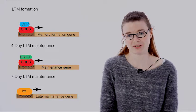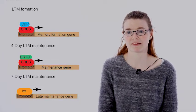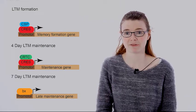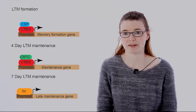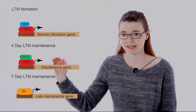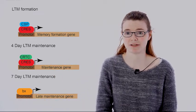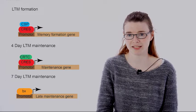They showed that for the formation of long-term memory, CREB requires the co-factor CBP. Whereas for the maintenance of early memories, CREB requires the co-factor CRTC. And even longer time periods become completely independent of CREB and require the transcription factor BX.